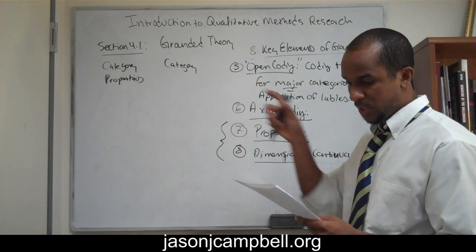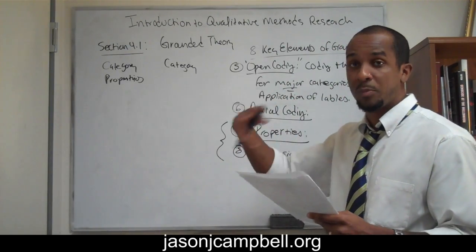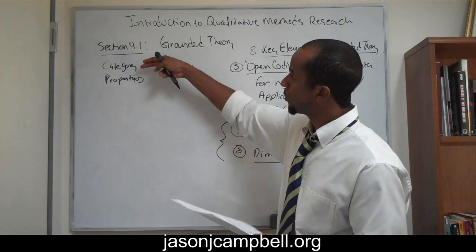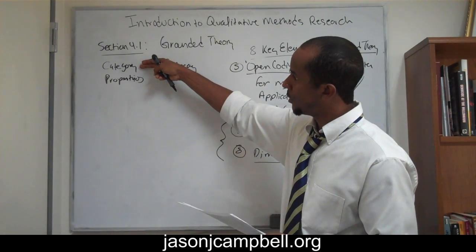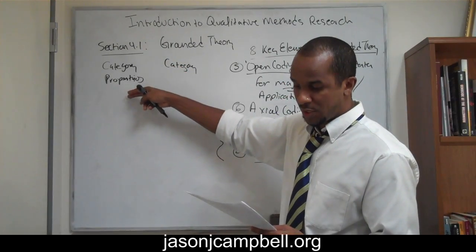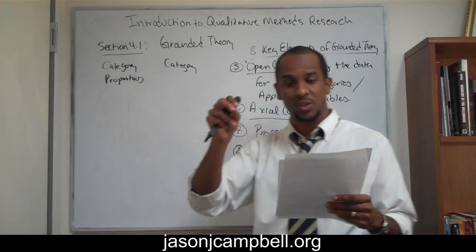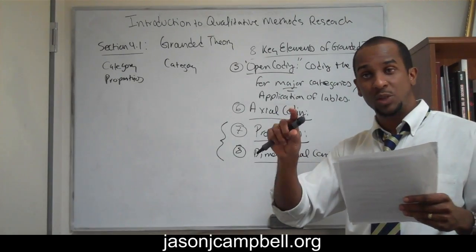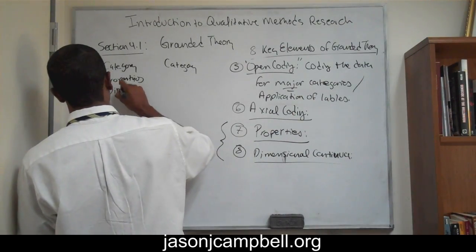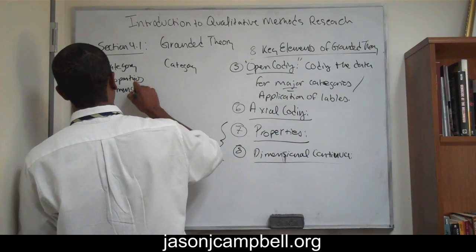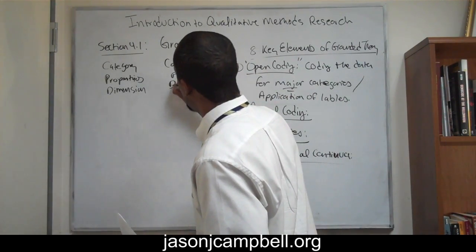And then the dimensions sit underneath that — representative locations of a property. So properties are characteristics of categories, and dimensions are representative locations along a continua of a property. So we have category, then property, and then dimension.